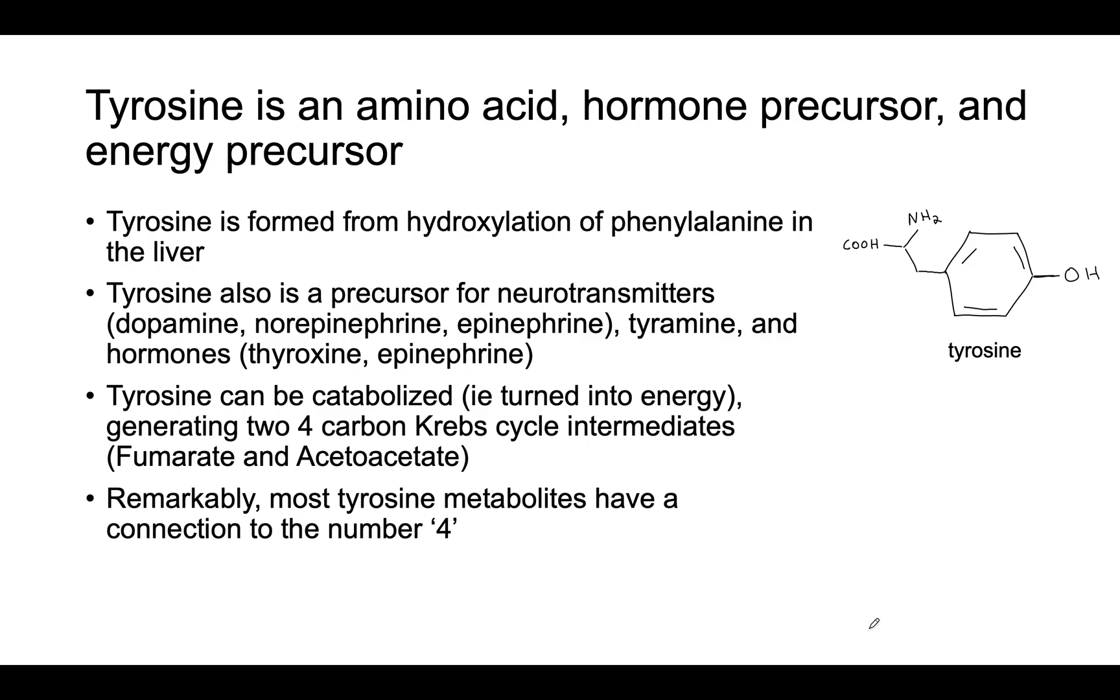Tyrosine can be catabolized into two four-carbon compounds, fumarate and acetoacetate, and these enter the Krebs cycle, or the TCA cycle.